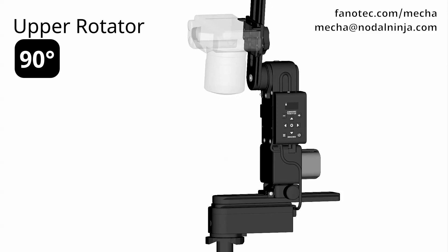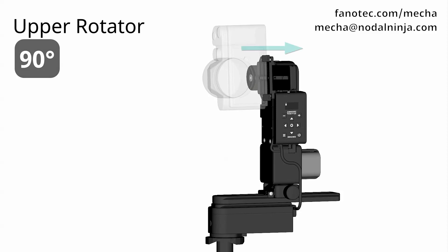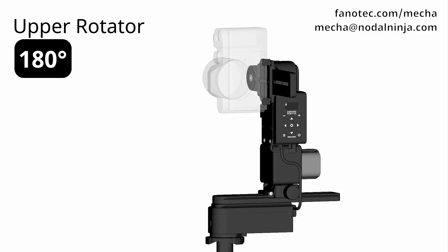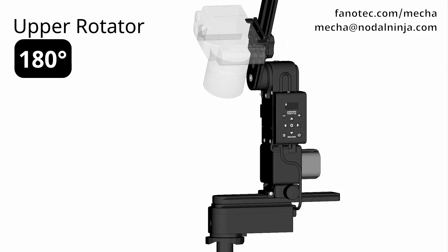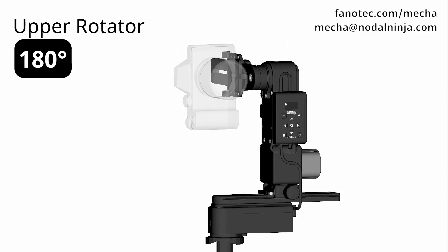For the upper rotator, press the right arrow button then the plus button to go from level to raised position. For the opposite direction, press the down arrow then the plus button and go back to level position. Similarly, for 180 degree rotations, use the up arrow button and the menu button. For the opposite direction, use the down arrow button and the menu button.